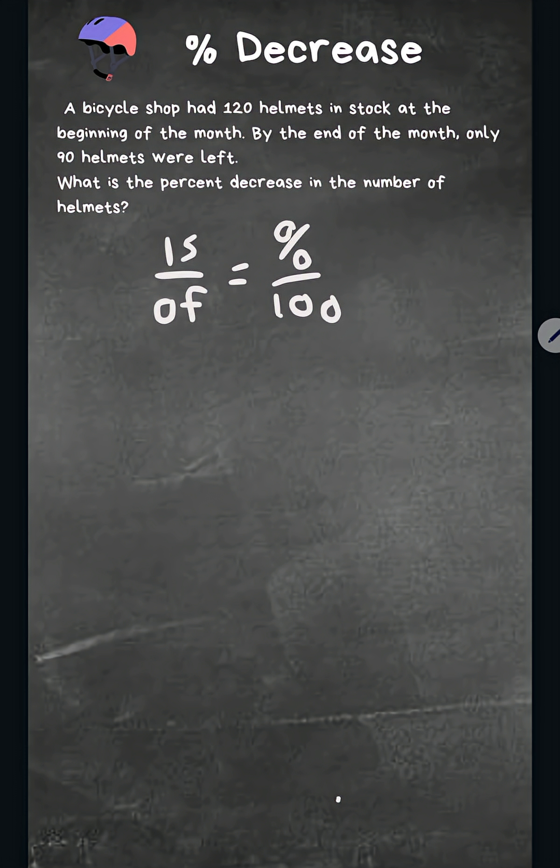Let's figure out first, how much did we decrease the helmets by? Our original is 120 helmets. At the end of the month, we only had 90. Let's go 120 minus 90, and that equals 30. We decreased by 30.